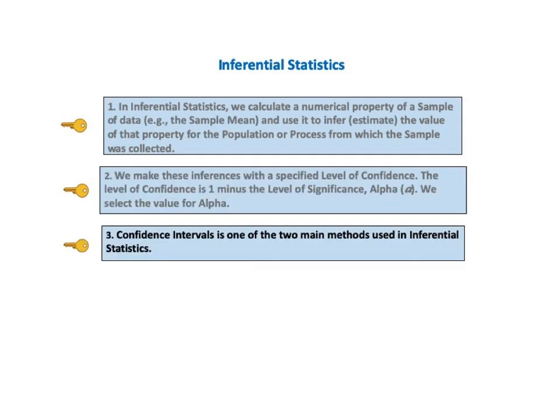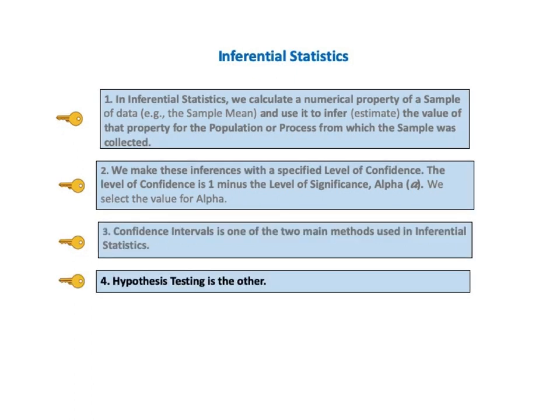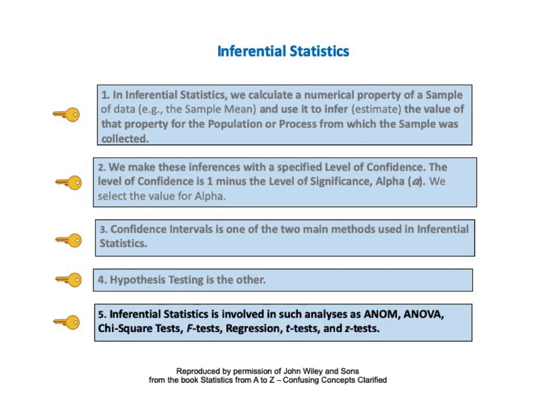Key number 3 says: confidence interval is one of the two main methods used in inferential statistics. Key to understanding number 4 says: hypothesis testing is the other. KTU number 5 says: inferential statistics is involved in such analyses as ANOM, ANOVA, chi-square tests, F-tests, regression, t-tests, and z-tests.